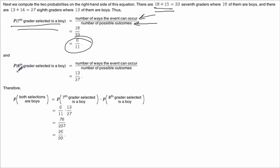Then the second probability is, what's the chance that the eighth grader selected is a boy? Well, once again, how many eighth grade boys are there? There's 13. And how many total eighth graders? 27.